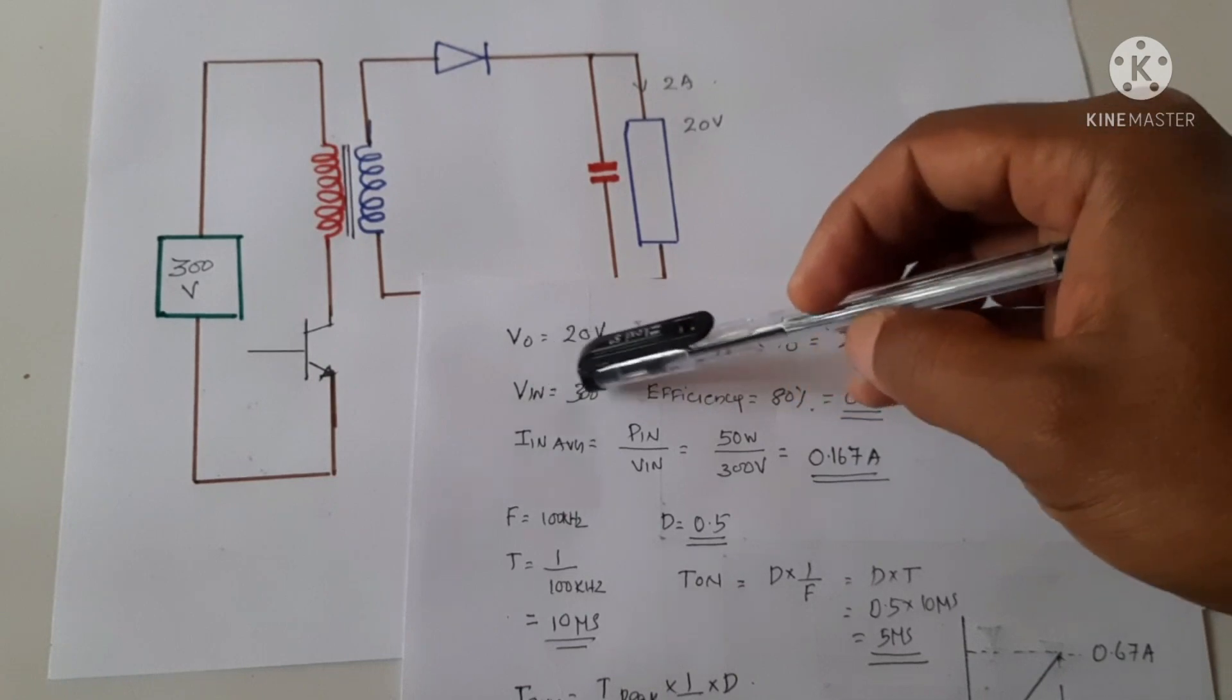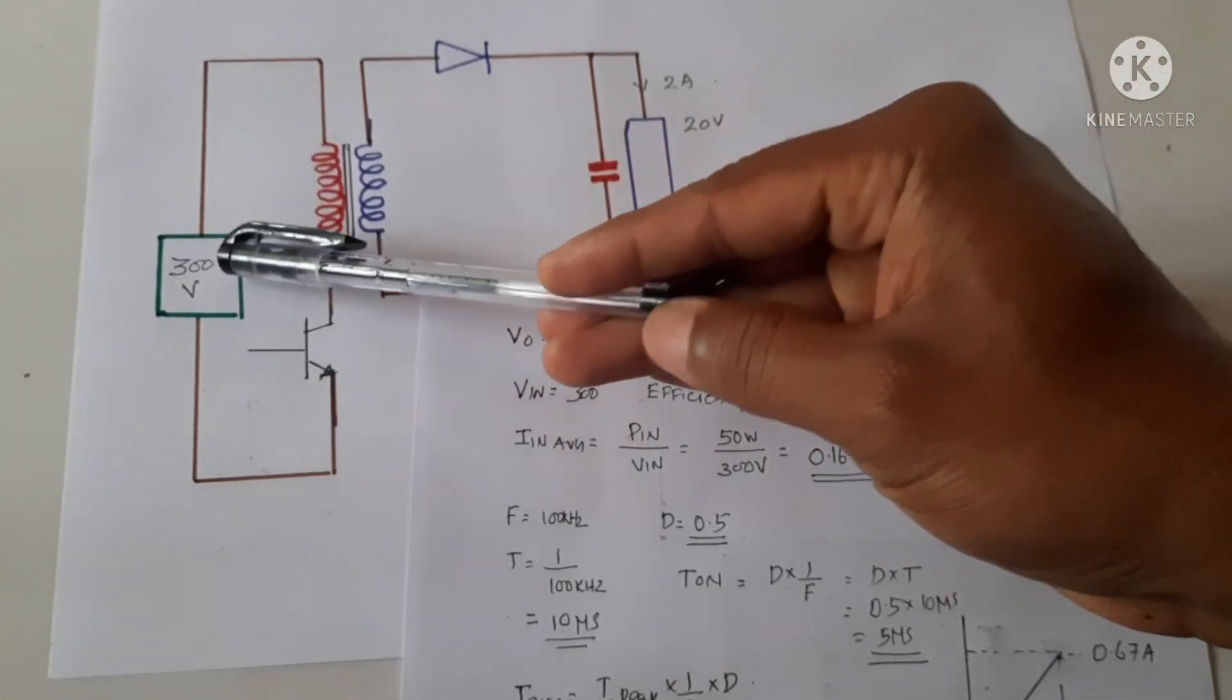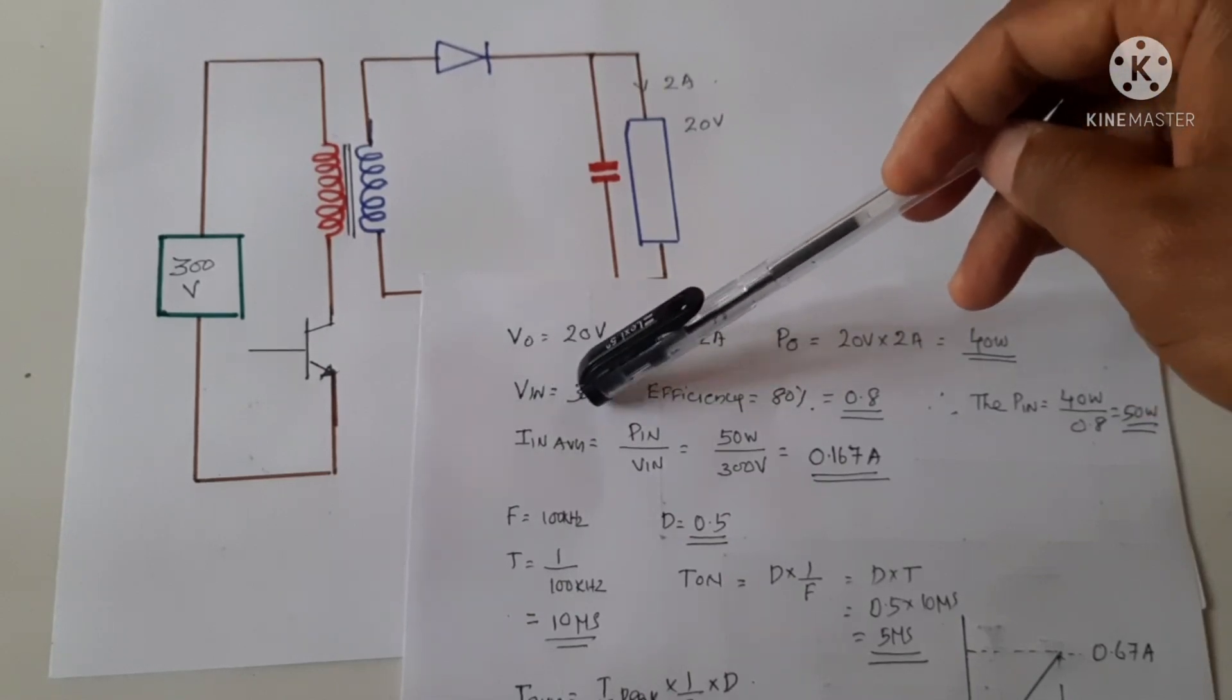Now what is the input voltage? The input voltage is rectified from AC, so this will be around 300 volts.